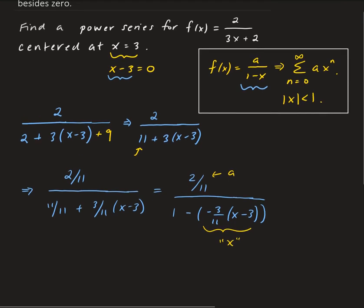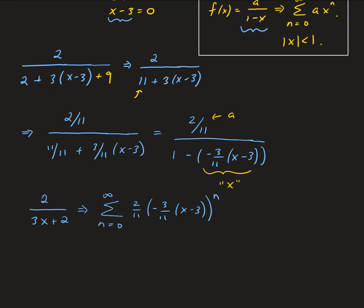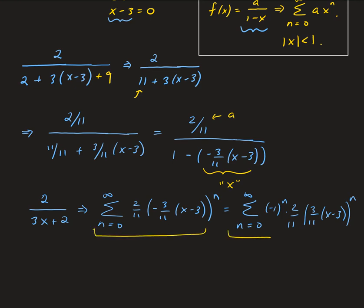So that means we're going to get the summation from 0 to infinity of 2 over 11 times negative 3 over 11 times x minus 3, all raised to the n. Furthermore, we can write this as the summation from 0 to infinity of 2 over 11 times negative 1 to the n times 3 over 11 times x minus 3, all to the power n. Either form is correct — whichever you prefer.